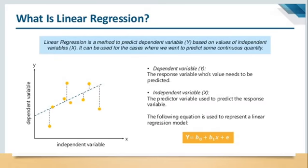What is linear regression? In linear regression, there is a linear relationship between the dependent variable y and the independent variable x. It is used for cases where we want to predict some continuous quantity. The main attribute of linear regression is the continuous quantity. In the graph, we see points shown in yellow color are the actual values, and the dashed line is the best fitted linear line.